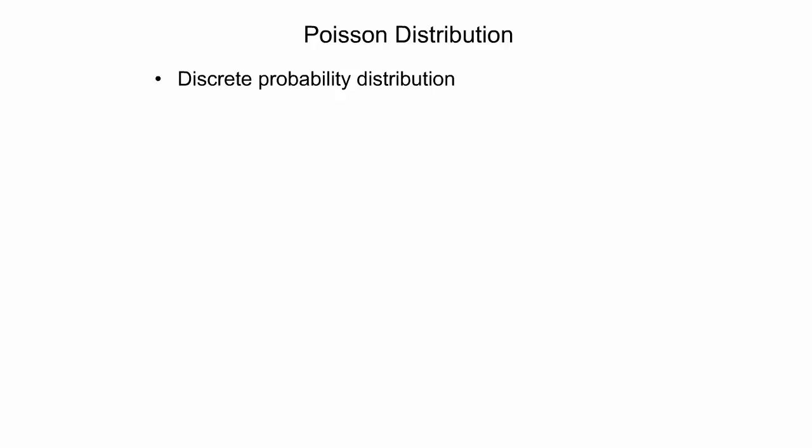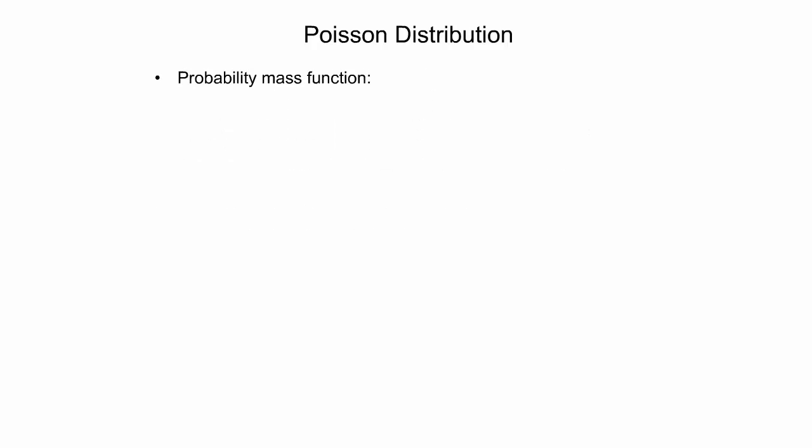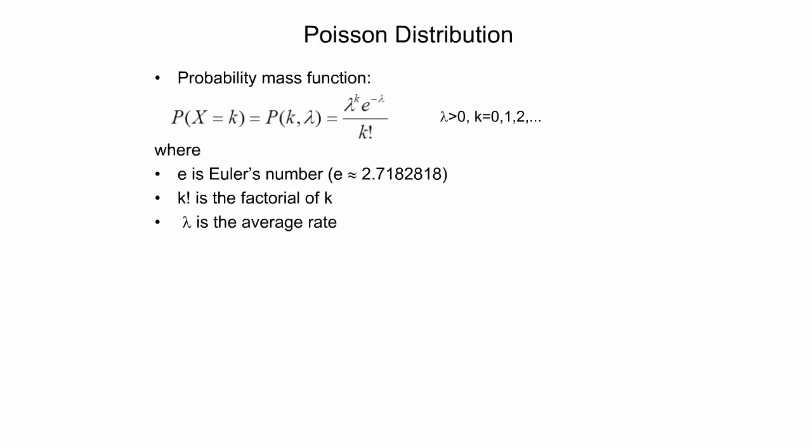The Poisson distribution is another example of a discrete probability distribution. Based on a known average rate of events per time interval or spatial unit, it expresses the probability of a given number of events occurring within that time interval or spatial unit. The average rate is denoted with the Greek letter lambda, and is usually taken from a sample such as the observed point pattern in the study region. The probability mass function of the Poisson distribution describes the probability of finding k events per fixed time or space interval based on the average rate lambda.